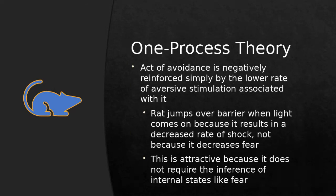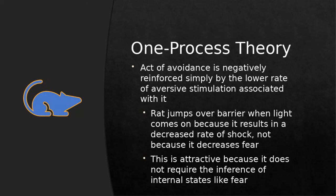For these reasons, most people do not feel the two-process theory offers a good explanation for what drives avoidance behavior. The alternative is the one-process theory of avoidance: the act of avoidance is negatively reinforced simply by the lower rate of aversive stimulation associated with it. The mouse jumps over the barrier simply because it leads to a lower rate of shock — not because jumping decreases fear. This theory does not require inference of internal states like fear, which aligns with behaviorism's focus on observable behaviors rather than unobservable internal processes. These are the two competing explanations for what drives avoidance behavior.